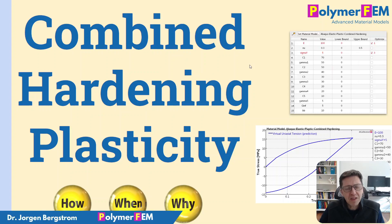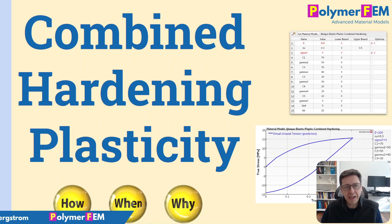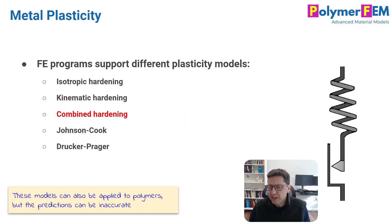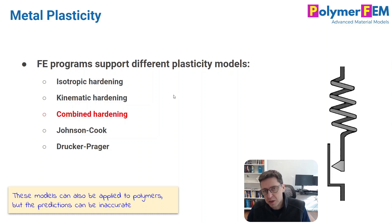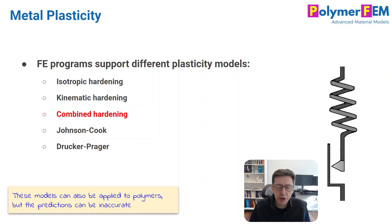Hi and welcome. Today I'm going to talk about plasticity models, and specifically a type called combined hardening plasticity. A finite element program has a lot of different plasticity models and they've been around forever. There are different kinds: isotropic hardening plasticity, kinematic hardening plasticity, and the type I want to talk about today is combined hardening — a little bit of kinematic and a little bit of isotropic, the best of both worlds.